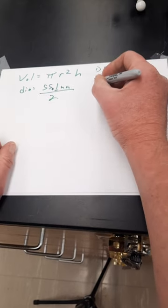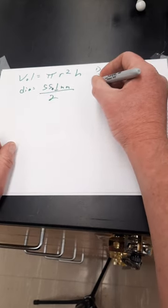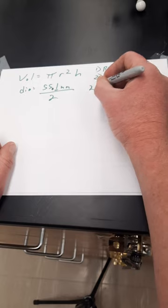So our final answer for the radius is 27.6 millimeters. 27.55 would be too many decimal places. So we have to round this to the nearest tenth. So this is our radius right here.